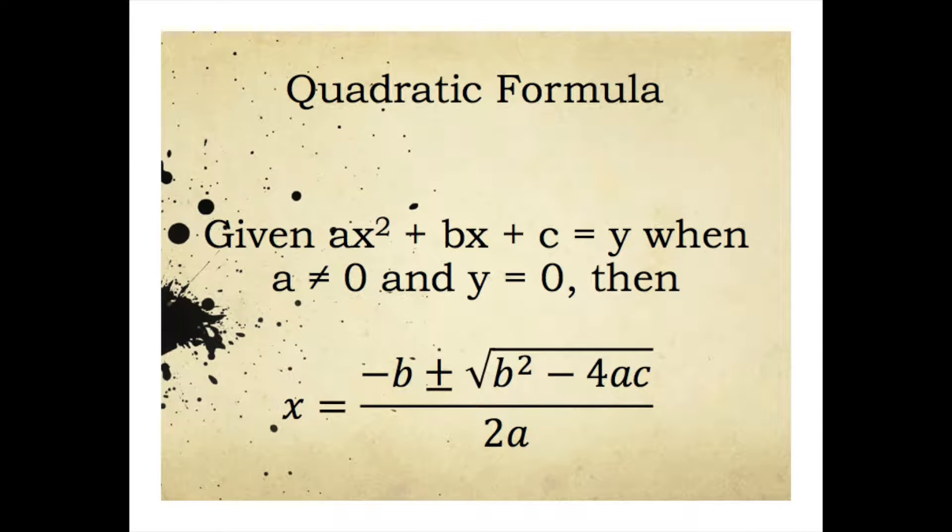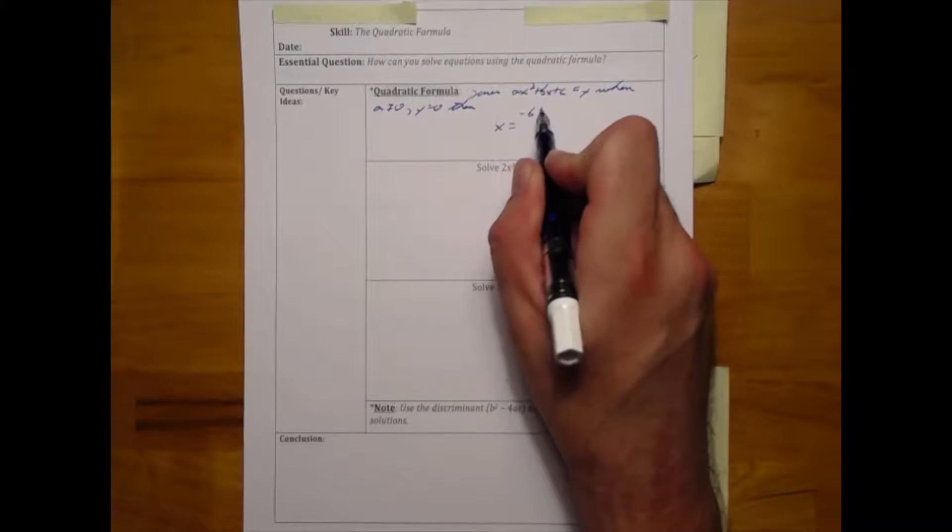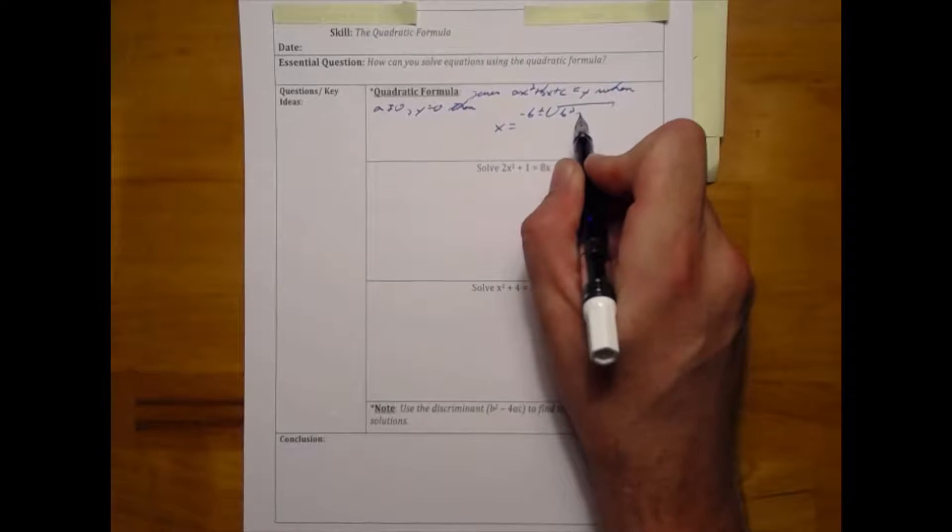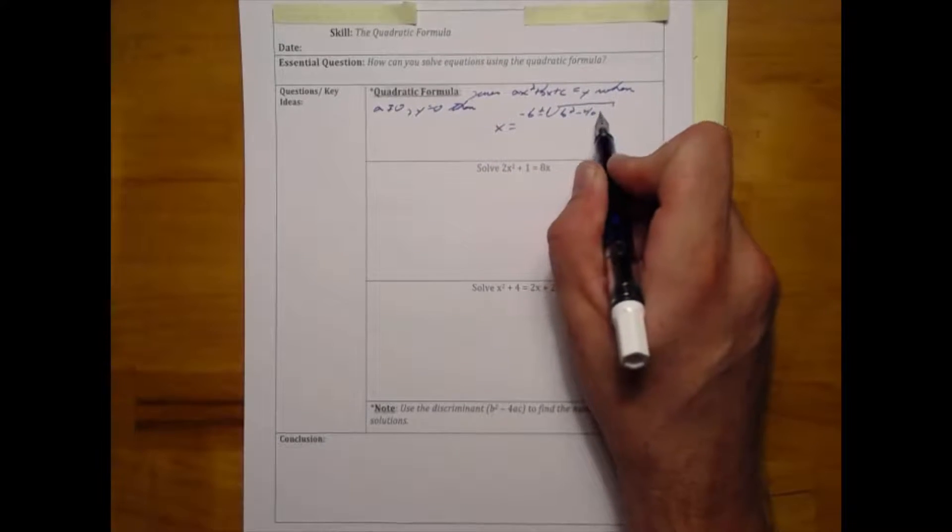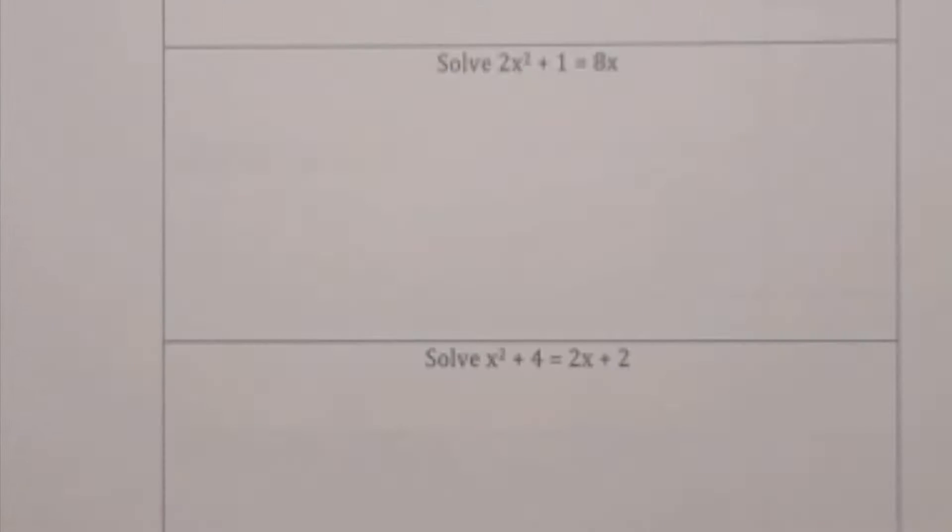Given ax squared plus bx plus c is equal to y when a is not 0 and y is 0, then x is negative b plus or minus the square root of b squared minus 4ac all divided by 2a.